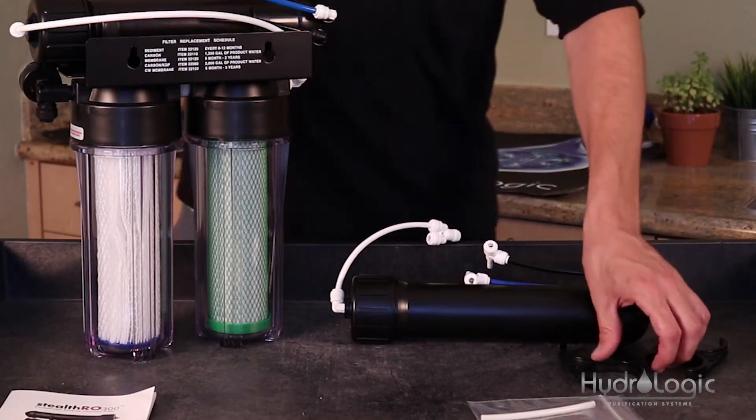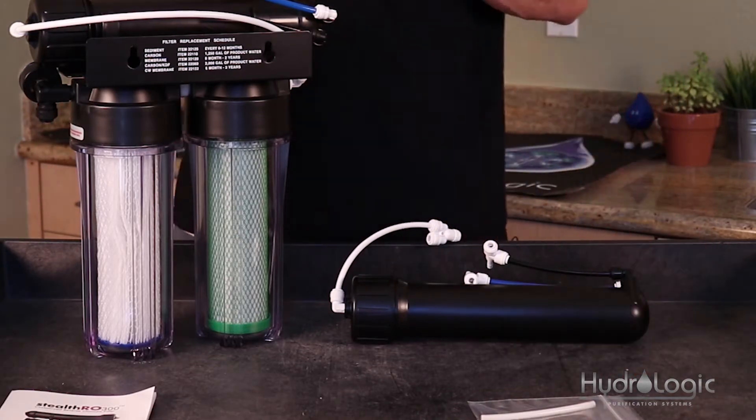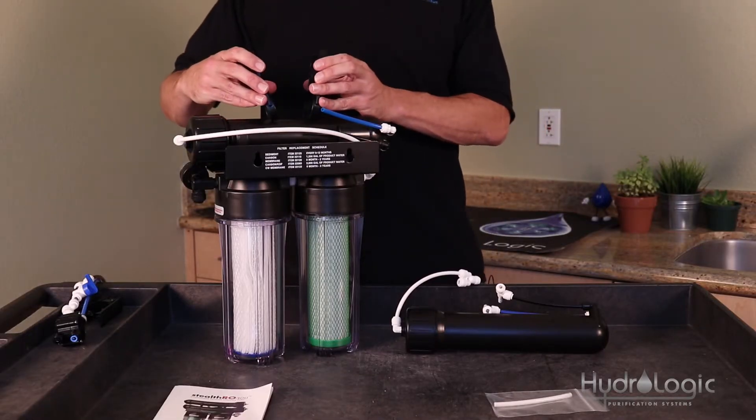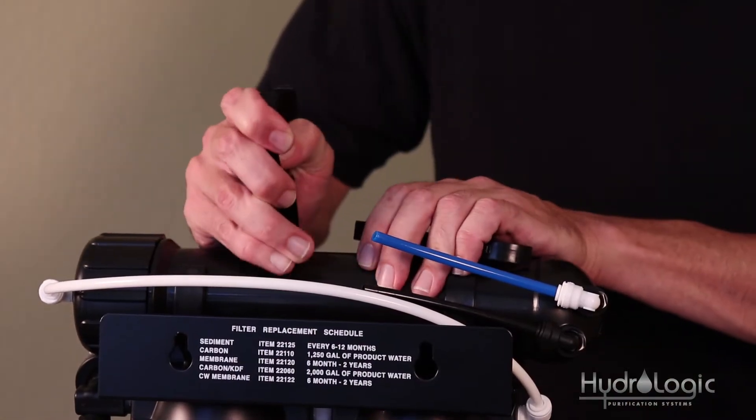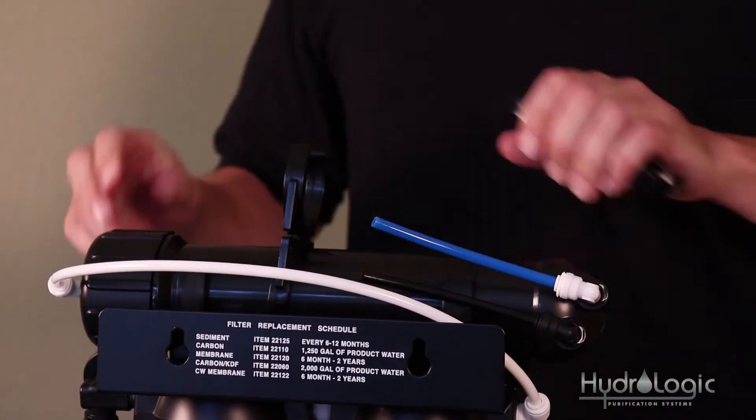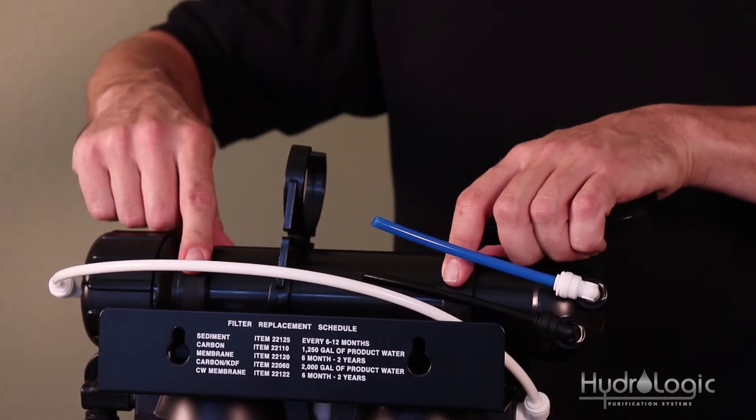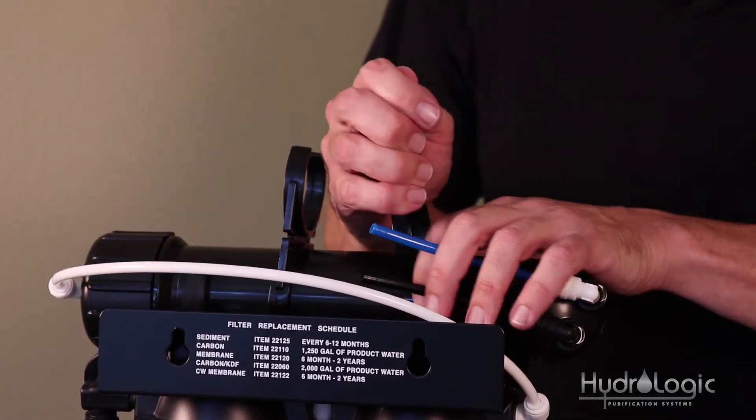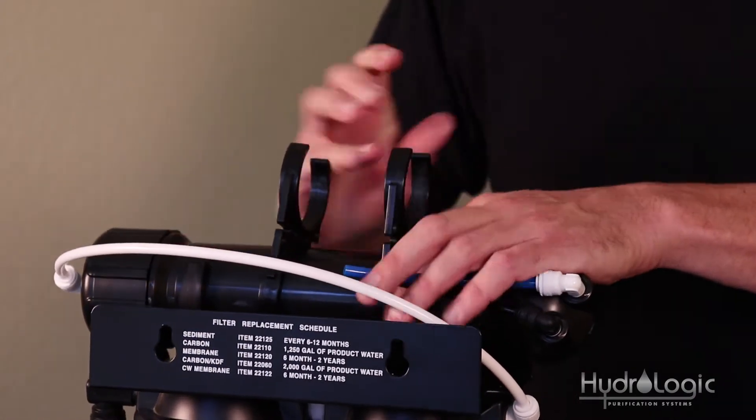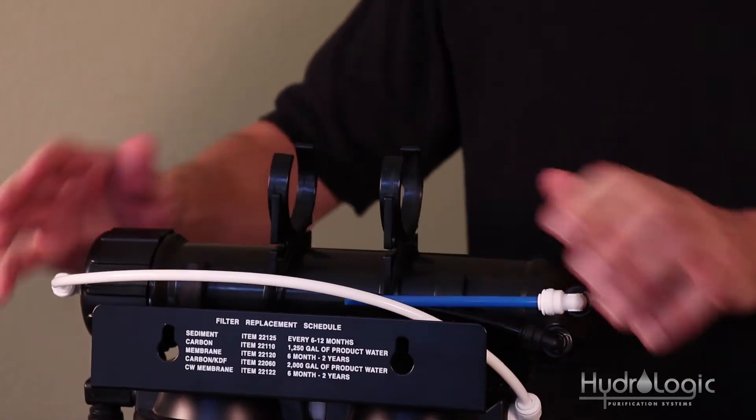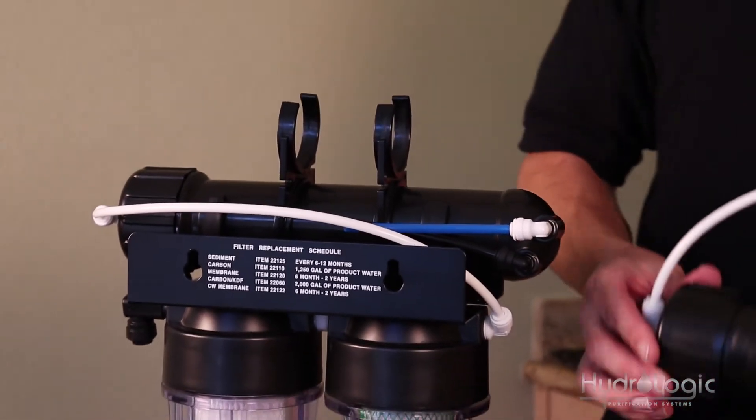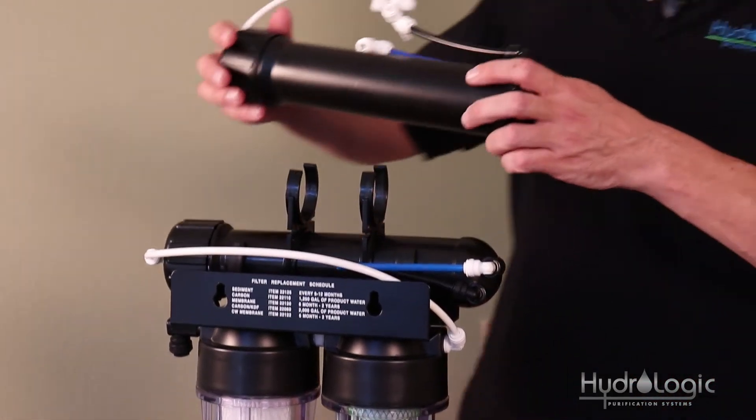Next thing you want to do is take the clips that came with your upgrade kit and clip these onto the existing membrane and put them in the middle, kind of wedged in between the two outer clips that are mounted onto your bracket right here. Then you take your new membrane assembly and clip it onto these clips.